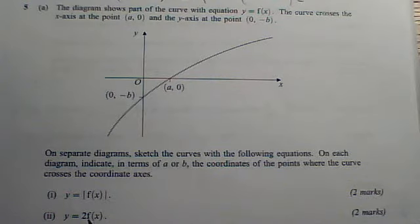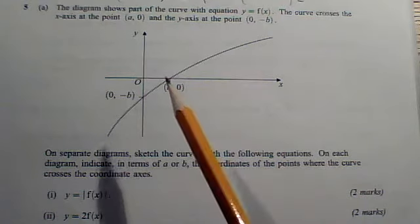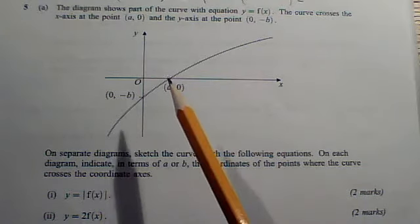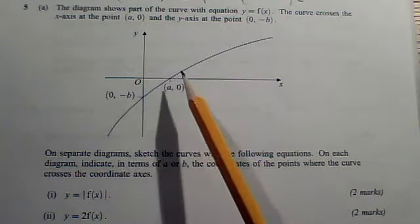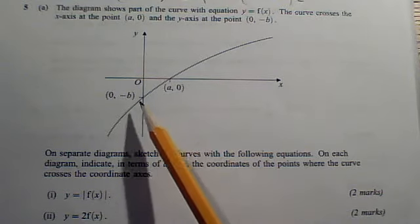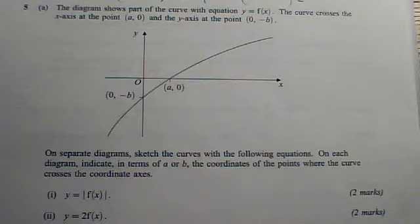Then for part ii, we've got a 2 shoved in front of the f of x, so you need to remember your theory of transformations. How does that 2 affect the graph? Decide the transformation first, and then decide how that will affect the shape of the graph, but more crucially, what change, if any, is made to the coordinates (a,0) and (0,-b) when you do that particular transformation. Decide those two intersections, draw a curve through those two points with the correct shape, and you'll get these two marks here.